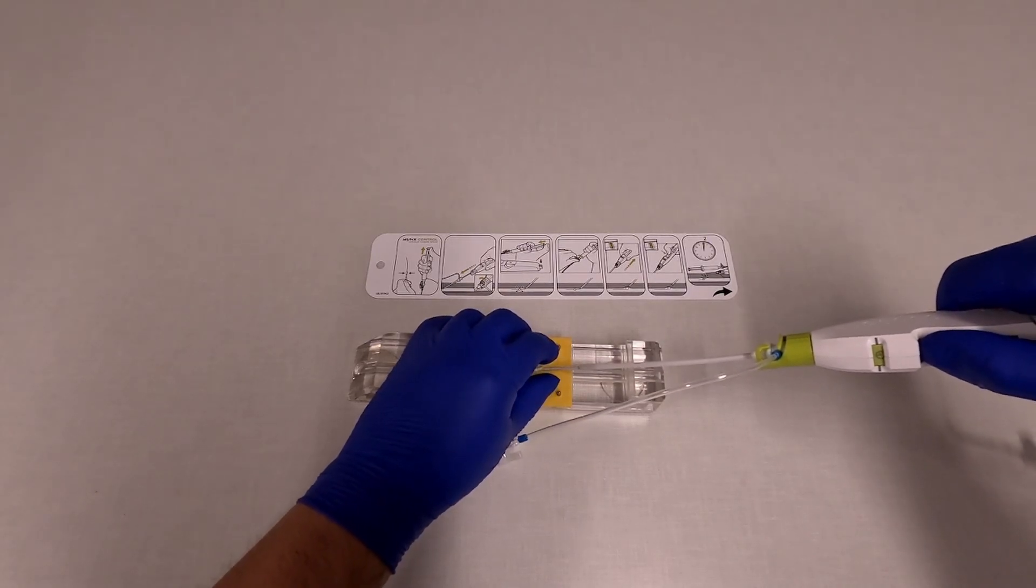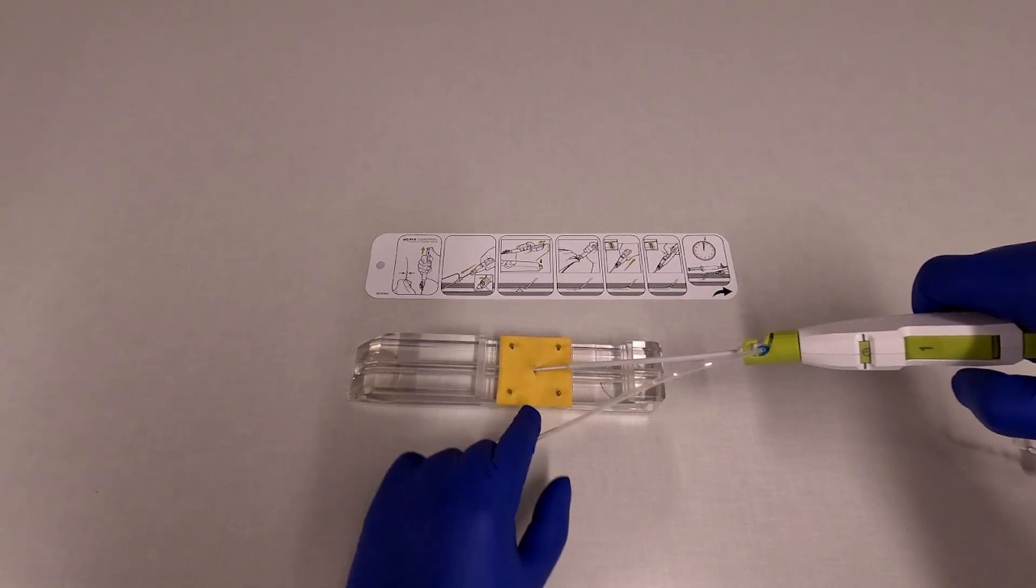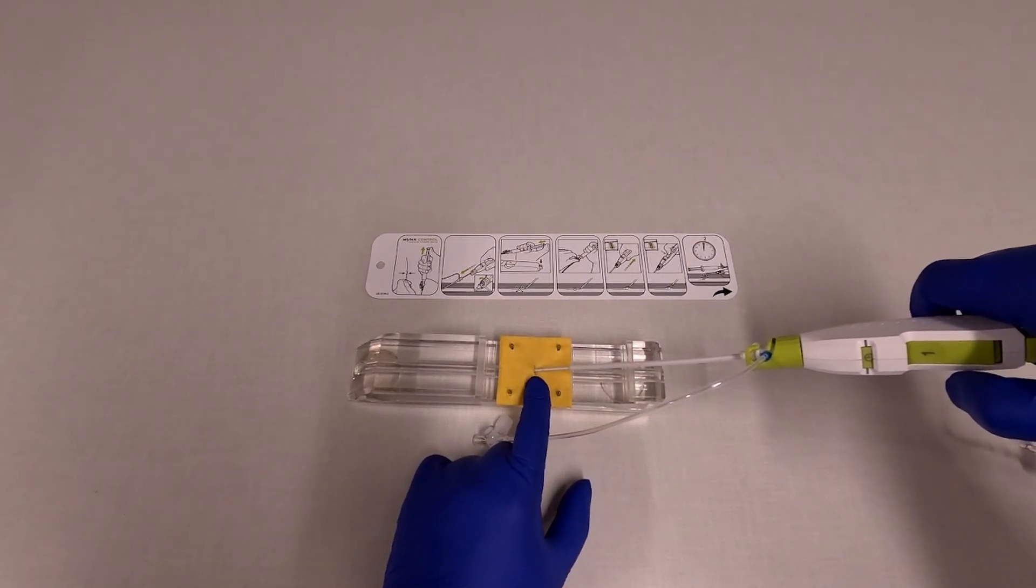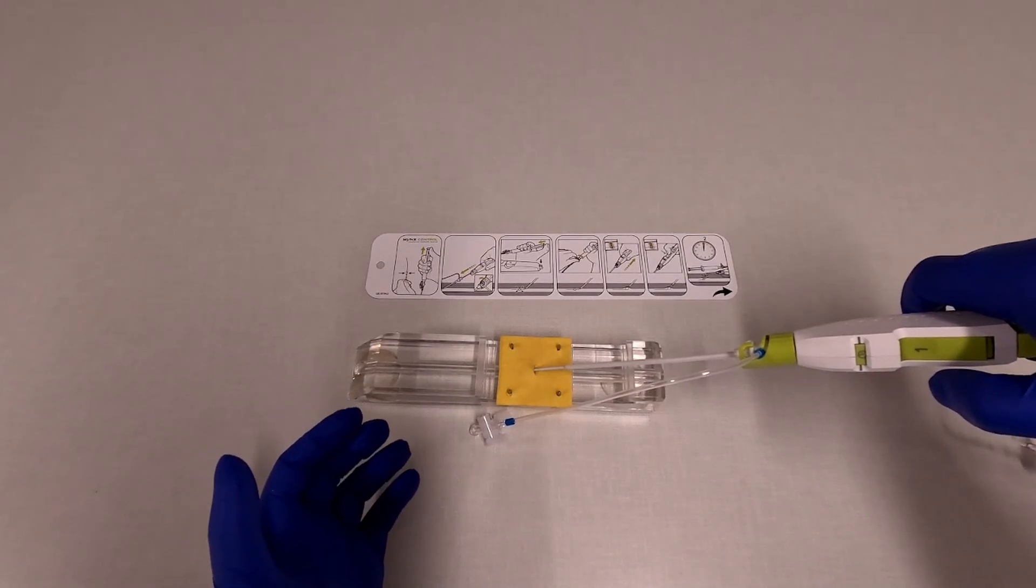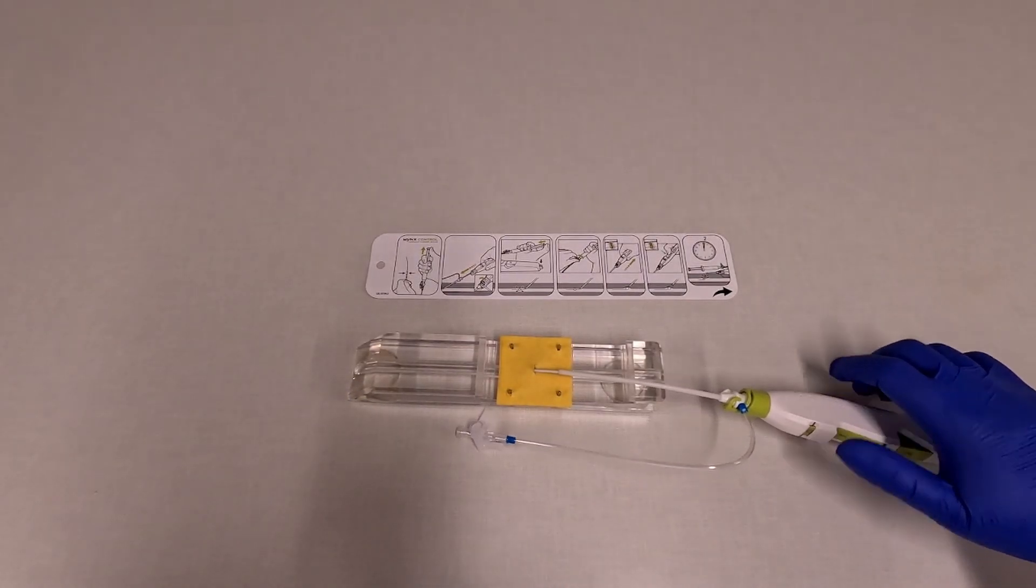So you push the number one button with your thumb and what that does is push down against the arteriotomy. You can see a little clock icon here and you can see it on the instructions.